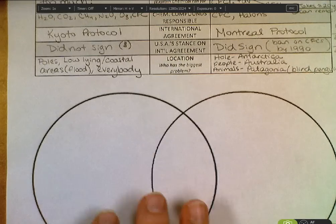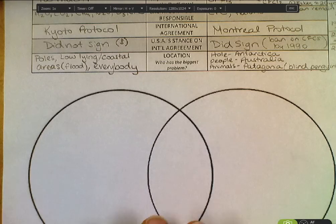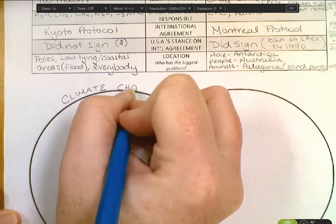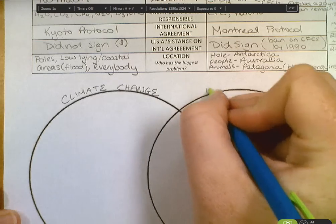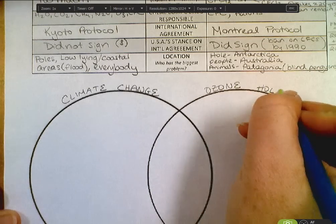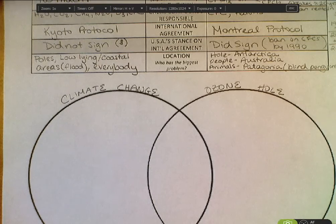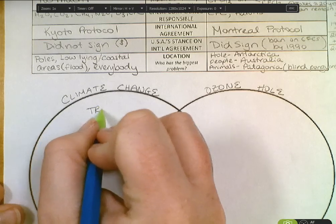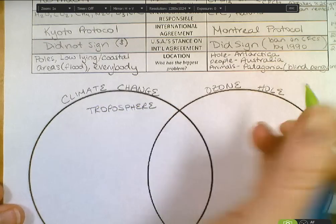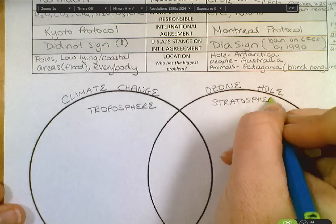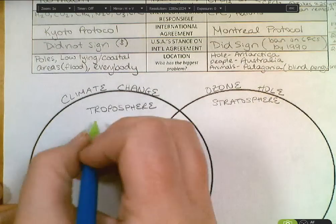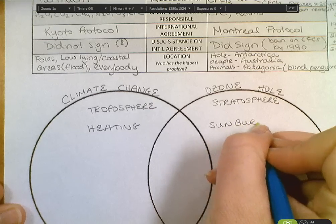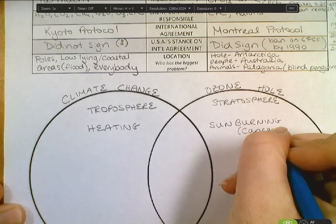Now I'm going to do a quick Venn diagram to show where some of the differences and similarities lie. Over here is climate change; over here is the ozone hole. Starting with location: they're both happening in the atmosphere but in very different locations — the troposphere versus the stratosphere. What kind of problem is each causing? Climate change is causing a heating problem. The ozone hole is causing a sunburning problem — more specifically, cancer.